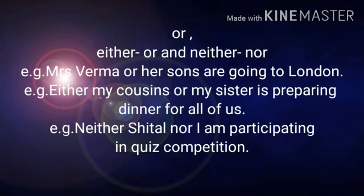When two subjects are joined by the conjunction 'or,' the verb agrees in number and person with the subject that is closer to it. The same rule applies in case of the paired conjunctions 'either...or' and 'neither...nor.' For example, 'Mrs. Verma or her sons are going to London.' Here, 'her sons' is closer to the conjunction 'or' and is a plural form, that's why we took 'are' as the verb.